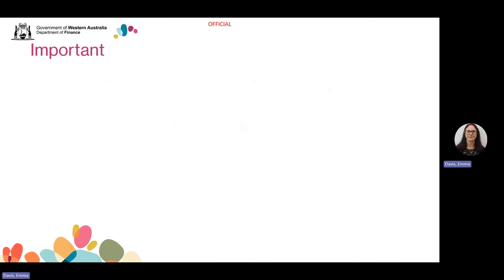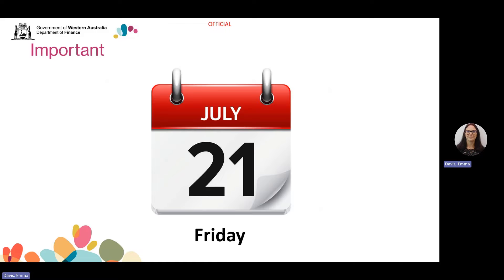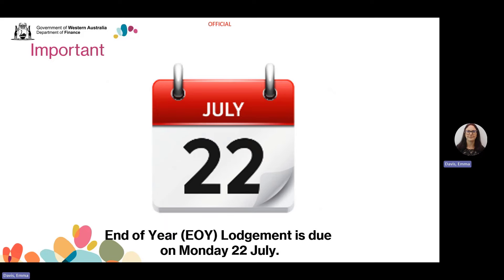When is the annual reconciliation due? 21 July. If 21 July falls on a weekend or a public holiday, then the reconciliation is due on the next business day. 21 July falls on a Sunday this year. Therefore, the due date for the June return and all required wages this year is Monday 22 July. Please note that this may differ in other jurisdictions. If you're an interstate employer, please visit the Payroll Tax Australia website for more information on your obligations in other states or territories.